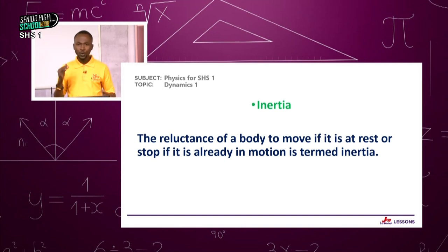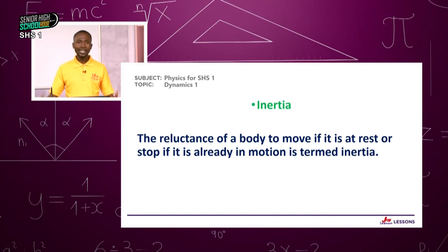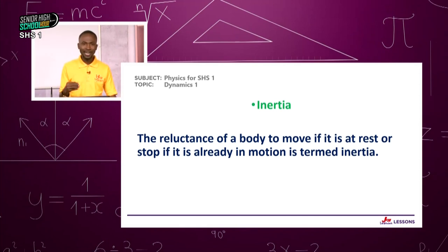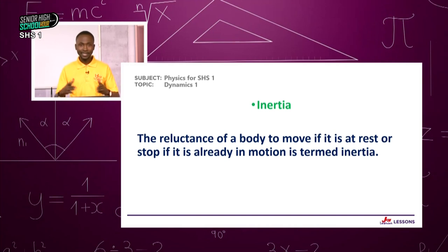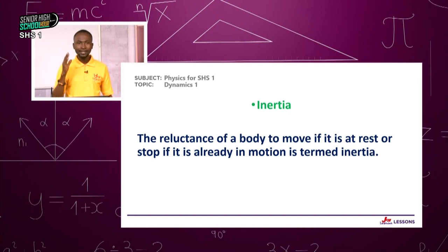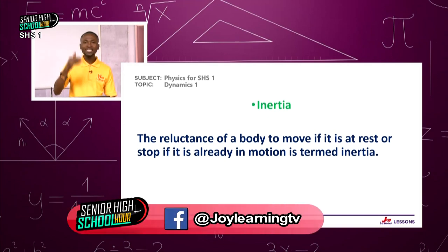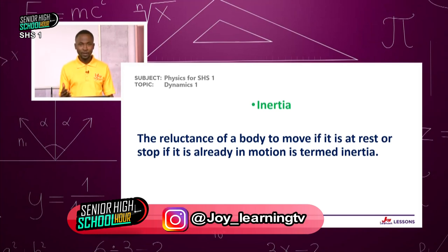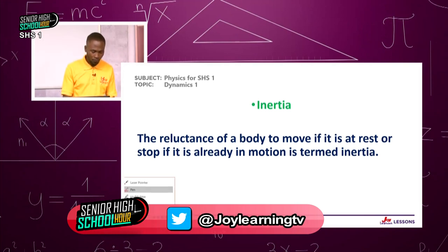Or consider a football. During a free kick, a player kicks the ball over a human wall. The goalkeeper tries to catch the ball — his hands might touch it, yet the ball enters the net. The goalkeeper is trying to stop the movement of the ball, but the ball is reluctant to stop. It resists that stoppage by the goalkeeper and moves into the net. This is what we call inertia.